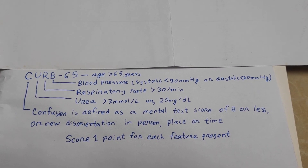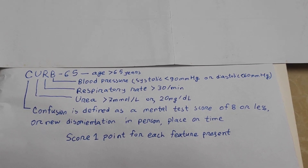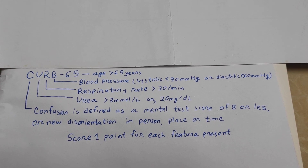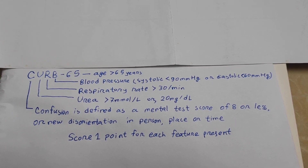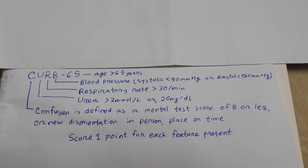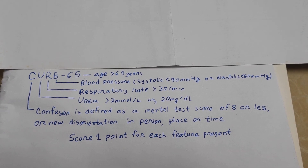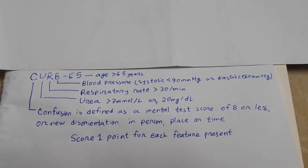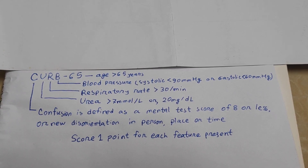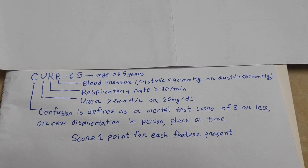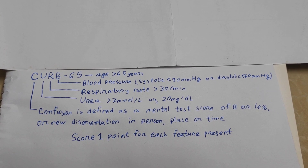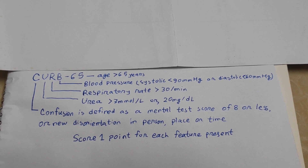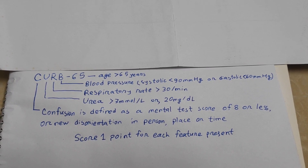U is for urea above 7 millimoles per liter or above 20 milligrams per deciliter. R is for respiratory rate above 30 breaths per minute. B is for blood pressure — systolic below 90 mmHg or diastolic below 60 mmHg. 65 refers to age above 65 years.